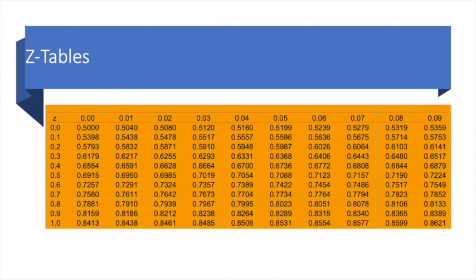So for example, to find the probability of Z being less than 0.4, we find the row for Z equals 0.4, and then since we do not want to add anything to 0.4, because the number is just 0.40, we pick the column for 0.00. At the intersection of these two we find the probability of 0.6554. So that is the probability that we were looking for.